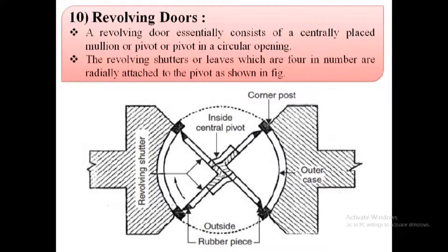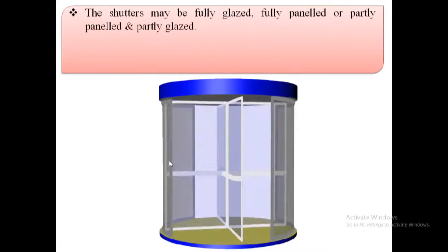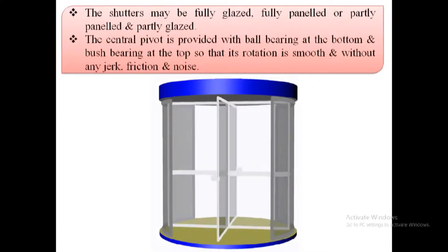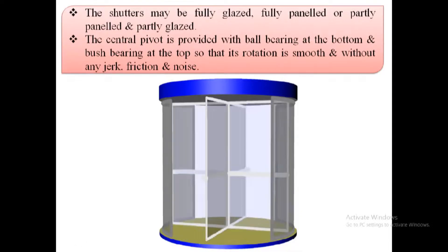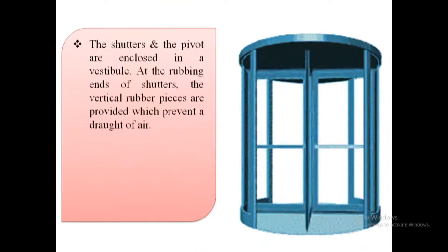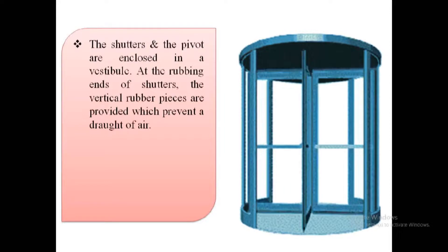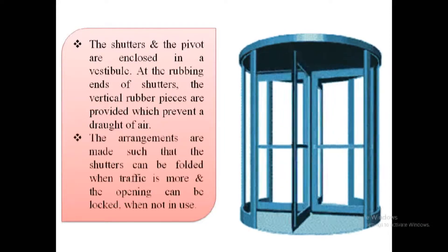Revolving doors. These doors consist of a centrally placed mullion to which four radiating shutters are attached. The mullion or vertical member is supported at the bottom, and its rotation is without any friction or noise. These shutters may be fully glazed, fully paneled, or partly glazed and partly paneled.